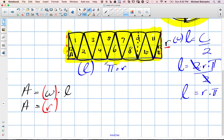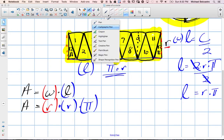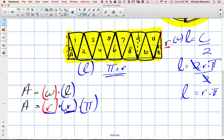The length is going to be replaced by our R times pi. So R times pi. And in multiplication, the associative property means we can multiply in any order we like. So R times R is R squared. A is equal to R squared times pi.